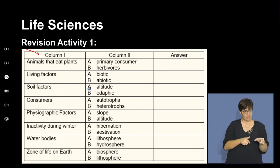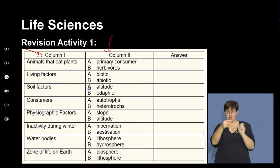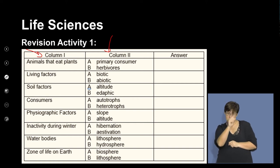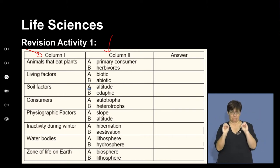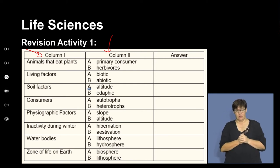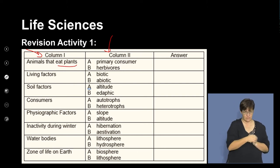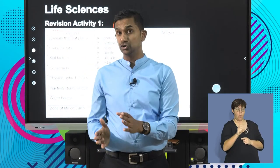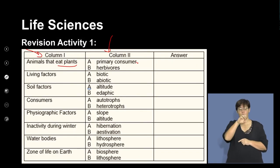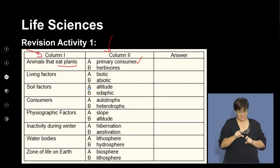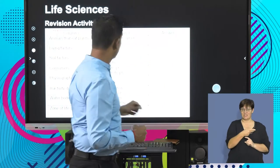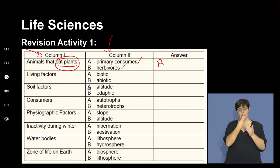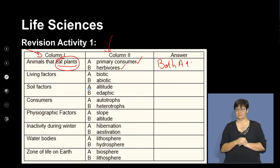The first term is animals that eat plants. We recognize that animals that consume plants are your herbivores or primary consumers. Primary consumers refer to those at the first level of consumers — herbivores are organisms that feed on plant material. In the context of eating plants, it could be both A and B that are correct. The next concept is living factors. Biotic — yes. Abiotic — these are your non-living components. So in this question the answer is A only. Notice that I'm following the instructions: write down A only or B only.